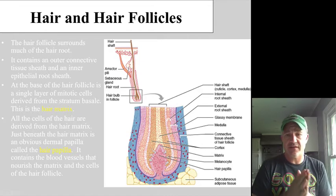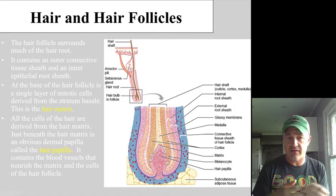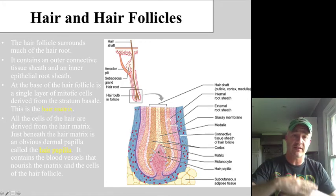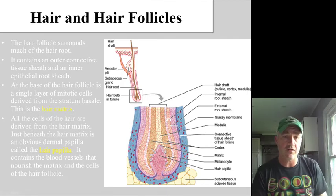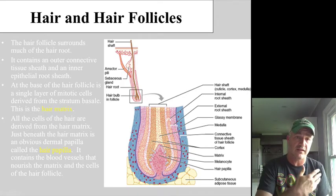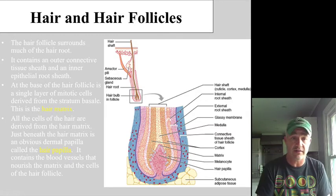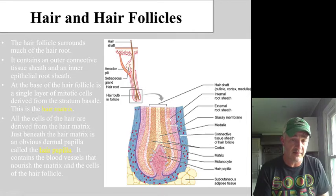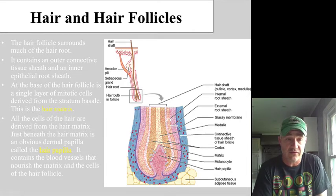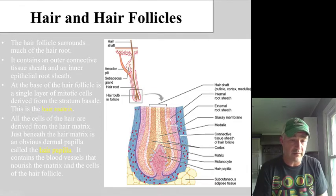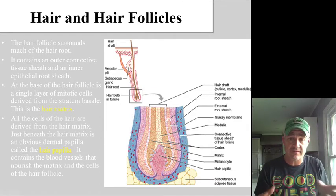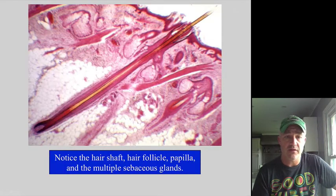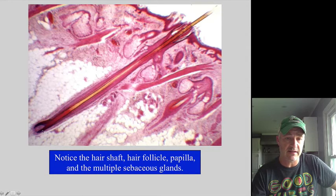Hair follicles are similar to nails and skin in that there are growing, dividing cells at the bottom. These mitotic cells push on the cells above them, causing hair to get longer. Much like the stratum basale of the skin, the equivalent region in hair is called the hair matrix. All cells that become hair start there, and there is good blood supply to those cells at the base of the hair follicles.